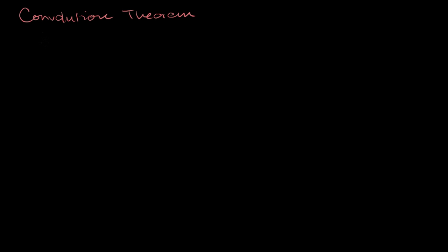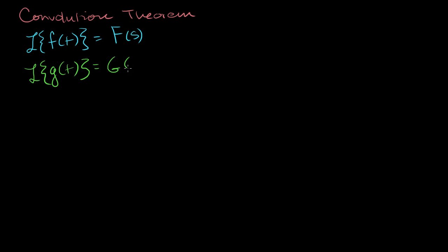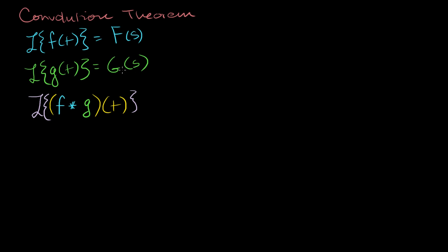It tells us that if I have a function f of t, and its Laplace transform is capital F of s, and another function g of t whose Laplace transform is capital G of s — then if we convolute these two functions, the Laplace transform of that convolution is equal to the product of their Laplace transforms: capital F of s times capital G of s.